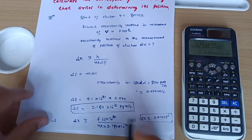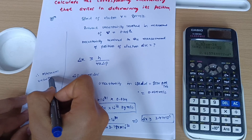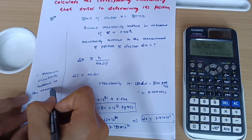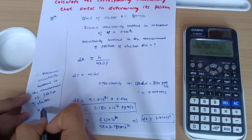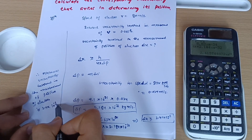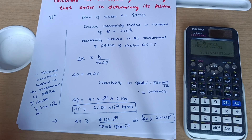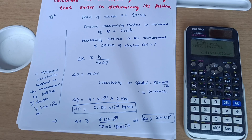Therefore, the minimum uncertainty involved in the measurement of position of the electron is 2.41 × 10⁻³ meters, which is delta x. This is the complete solution for this 6-mark question. These questions are purely based on formulas — the key is to recognize which topic the question belongs to and how to tackle it. Make sure you share this video with friends and batch mates who are struggling in physics. Thanks for watching.